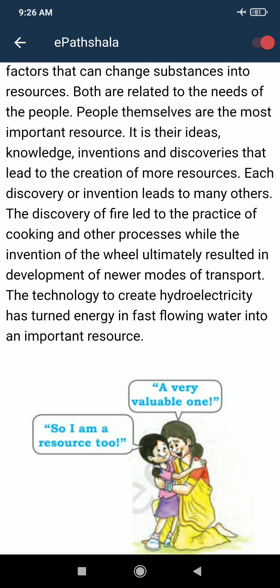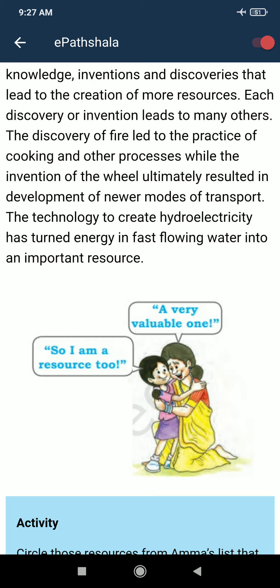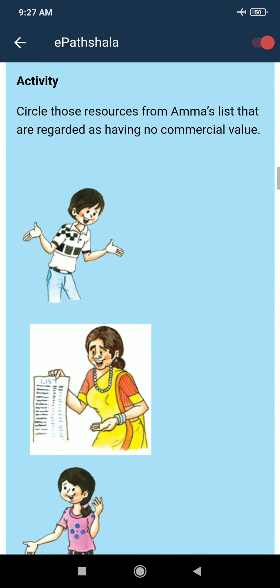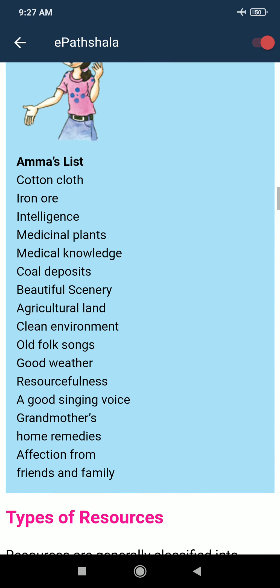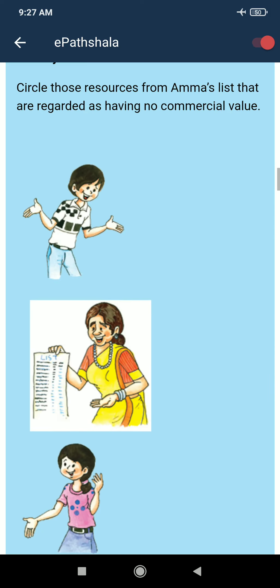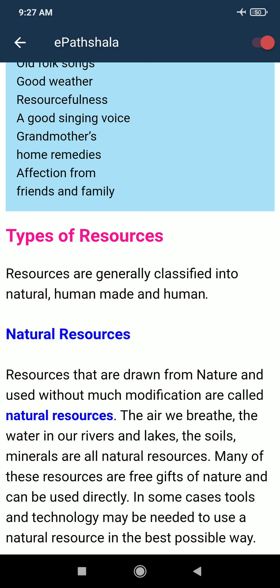The technology to create hydroelectricity has turned the energy in fast-flowing water into an important resource, giving us electricity. Now there is an activity: circle those resources from Amma's list that are regarded as having no commercial value. You can identify from the list which resources do not have any economic or commercial value.